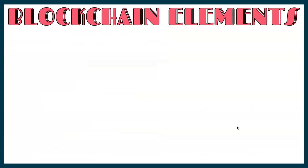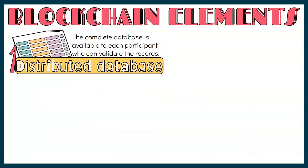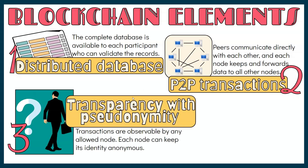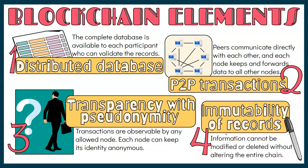Blockchain technology has the following core elements. Distributed database: the data is not controlled by any single computer; the complete database, including its history, is available to each node on a network, and participants can by themselves validate the records of each transaction. Peer-to-peer transactions: peers communicate directly with each other rather than through a central authority, and each node keeps and forwards data to all other nodes. Transparency with pseudonymity: transactions can be made by any allowed node, and each node can keep its identity anonymous. Immutability of records: when a transaction is recorded, its information is immutable since it is chained to all previous transactions.